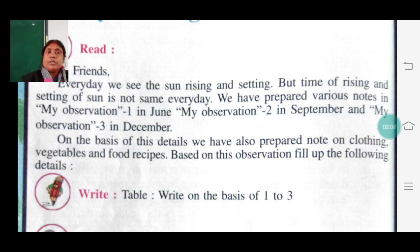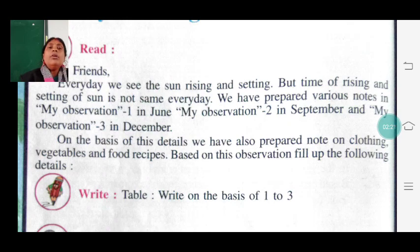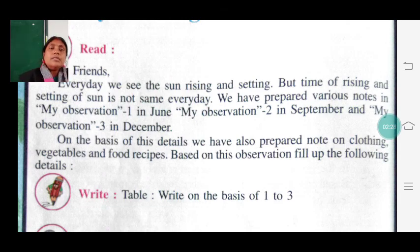The first observation is in the month of June, the second in September, and the third in December. In these three observations, we have to write the sunrise time and sunset time. Along with that, you will also mention our clothing and food habits, since those are also different across seasons.